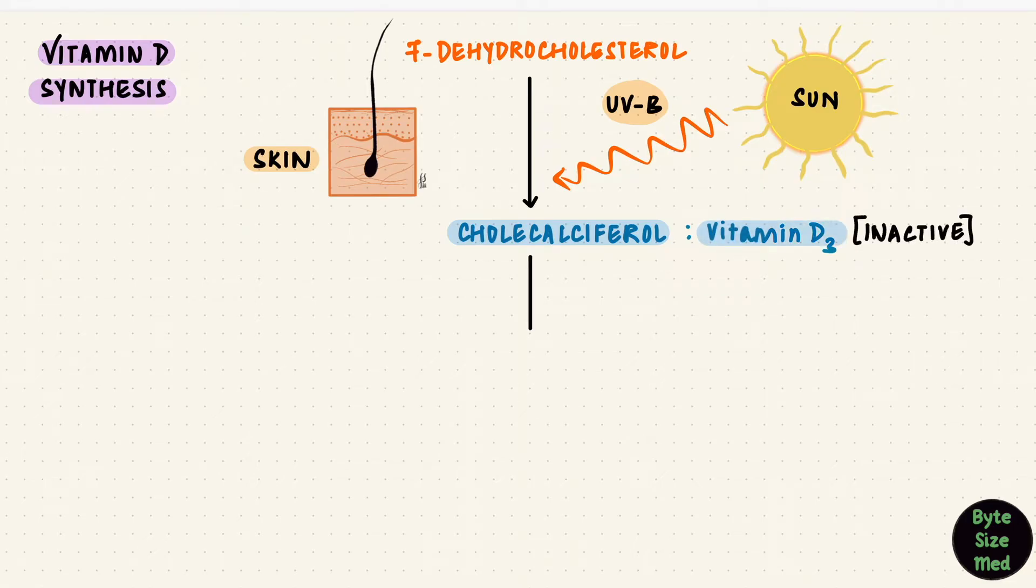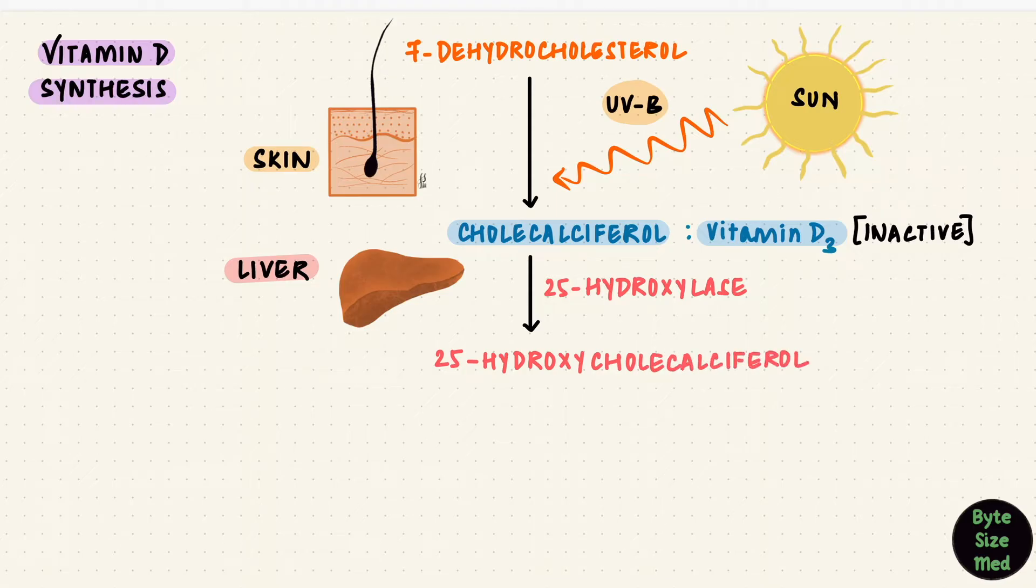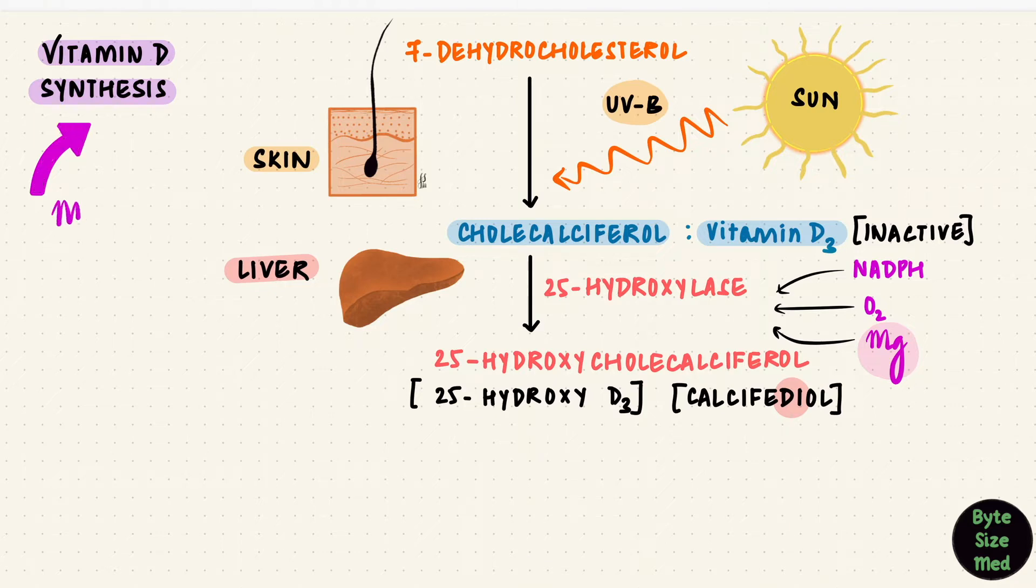Now we need the second organ, the liver. This 7-dehydrocholesterol had one hydroxyl group. We're going to add another one now. That's by 1α-hydroxylase which will add it at the 25th position. This makes 25-hydroxycholecalciferol or 25-hydroxy-vitamin D3. Since now there are two hydroxyl groups, it's also called calcifediol. This step needs cofactors like NADPH, oxygen, and magnesium. So magnesium is needed for vitamin D synthesis and a magnesium deficiency can thus result in a vitamin D deficiency as well.